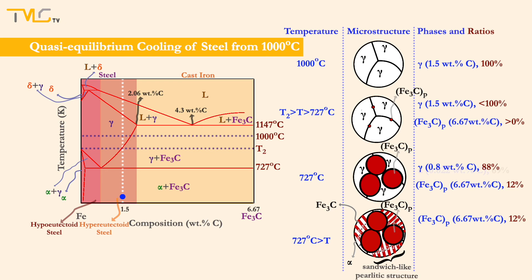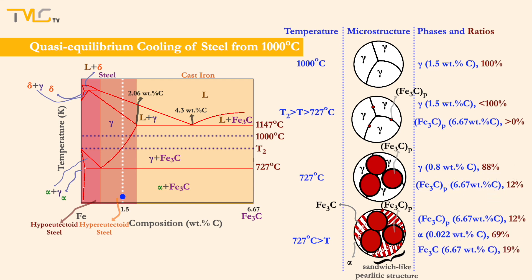As we calculate the distribution of the newly formed phases via the lever rule, the shares of ferrite and cementite phases in the pearlite are found to be 78% and 22%, respectively. Pearlite stands for 88% of the whole mixture, meaning that newly formed ferrite and cementite within pearlite stand for 69% and 19% of the whole phase mixture, respectively, and the remaining 12% is the primary eutectoid cementite.